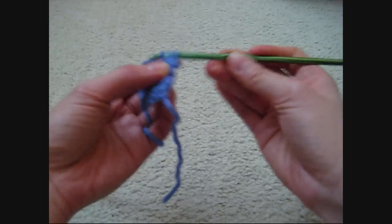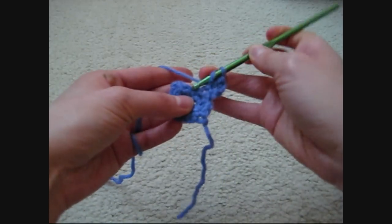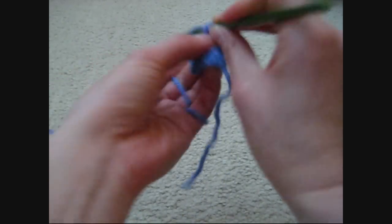Then yarn over and pull it through the last 2 loops. You do the same for the rest of the stitches.